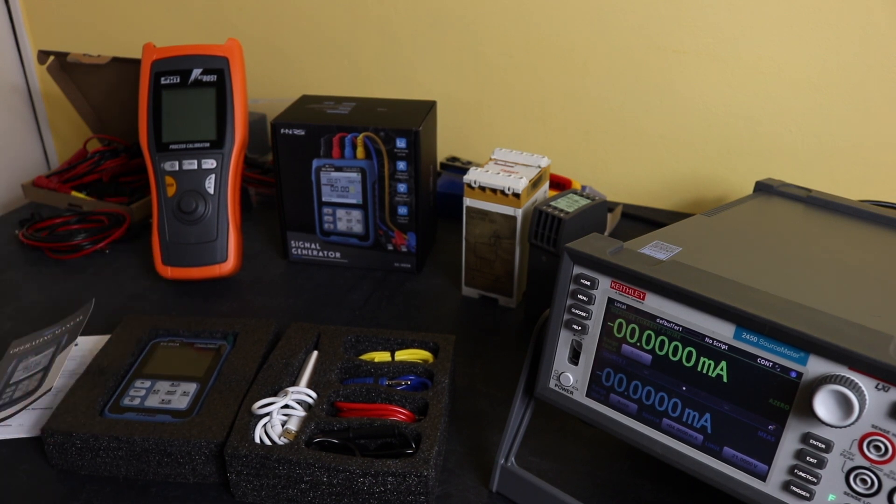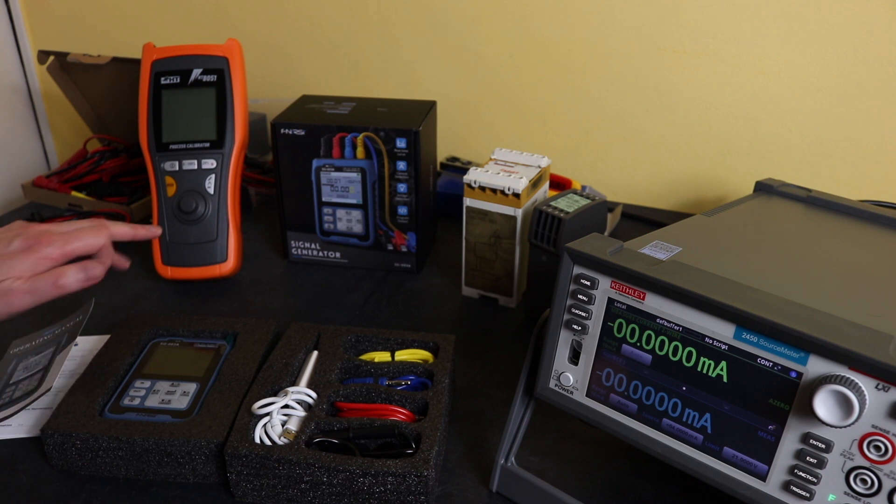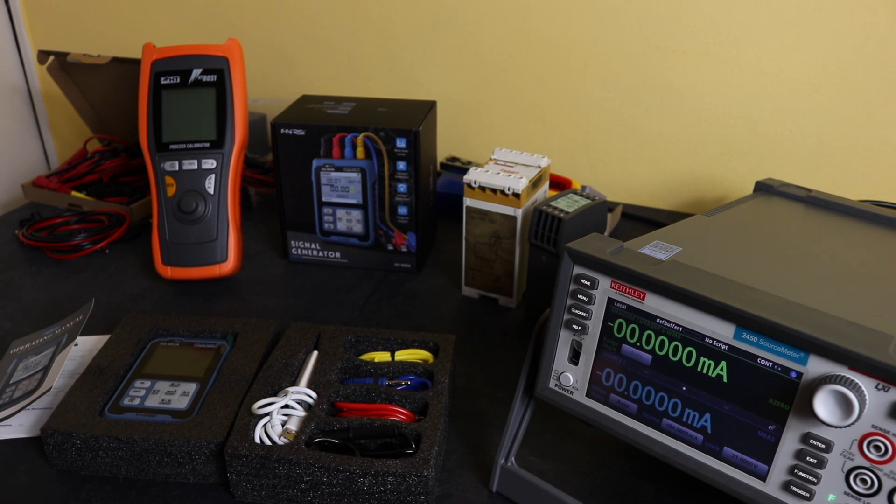However, this little unit I picked up for £65 in the UK, whereas this HT8051 retails for £650. So this is 10 times cheaper. If you look at the basic specifications, this is a 0.1% accuracy whereas this is 0.02% accuracy. So 10 times cheaper but five times less accuracy.